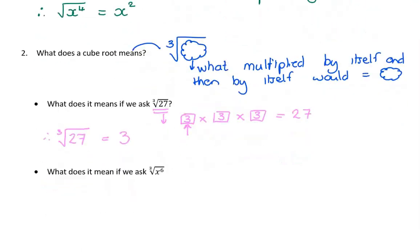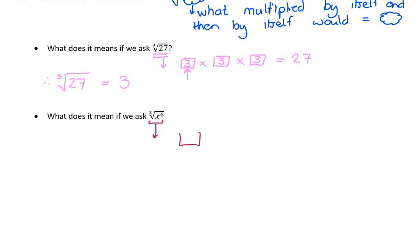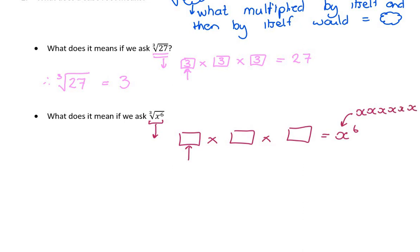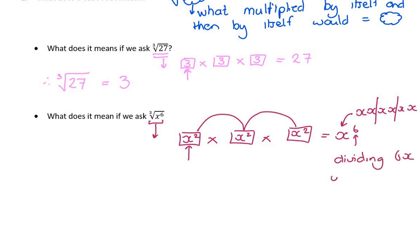We can now extend this to algebra. The cube root of x to the power of 6 means: what multiplied by itself and then by itself again would give me x⁶? x⁶ means I have six x's, and I need to divide them into 3 equal parts. That gives 2 x's in each group — so x squared times x squared times x squared. When you multiply powers with the same base, you add the exponents: 2 plus 2 plus 2 gives 6. So the cube root of x⁶ is x squared — it's basically 6 divided by 3.